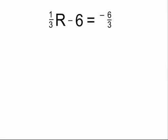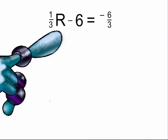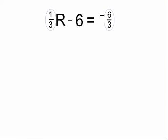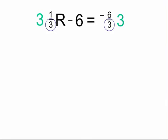In the following equation, we have 1/3r minus 6 equals negative 6 over 3. We want to get rid of the fractions as soon as possible. Notice that both fractions have a common denominator of 3, which means we can multiply both sides by 3 to get rid of the fractions.